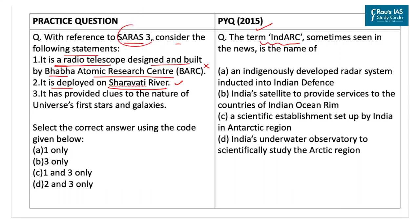The Sharavathi river is a west-flowing river and empties into the Arabian Sea. The third statement says it provides clues to the nature of the universe's first stars and galaxies, and this is correct — it will provide clues about the nature of the universe's first stars and galaxies, and can throw light on the energy output, luminosity, and masses of the first generation of galaxies bright in radio wavelengths. As only statements 2 and 3 are correct, the correct code is option D. The previous year question answer is also option D.